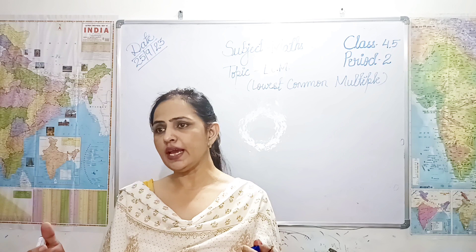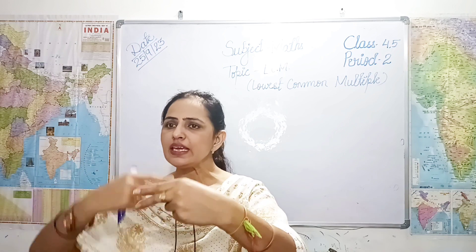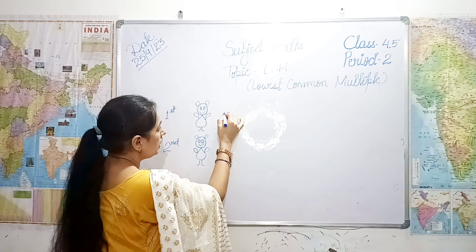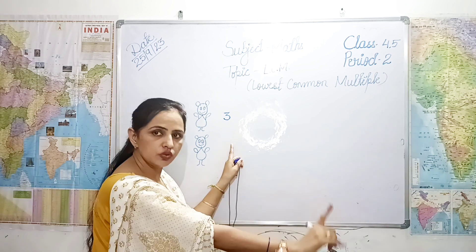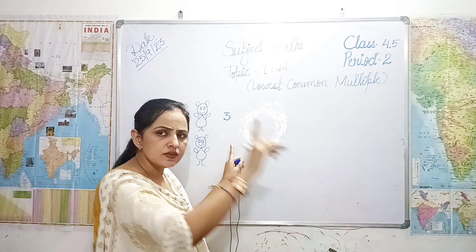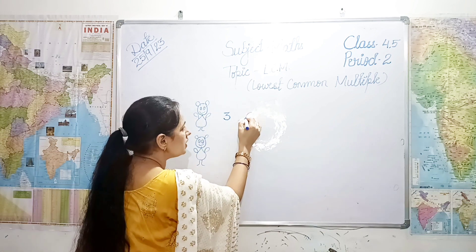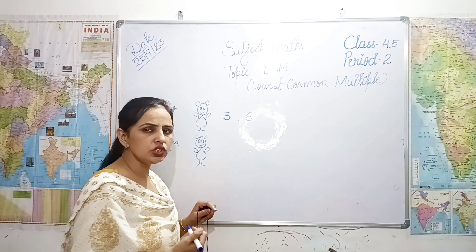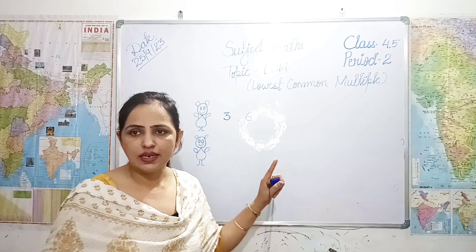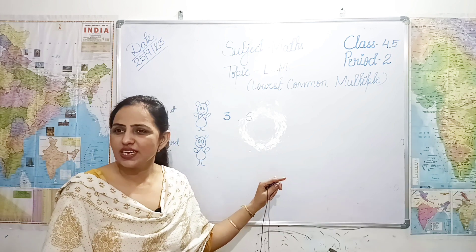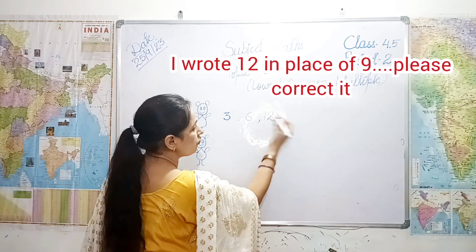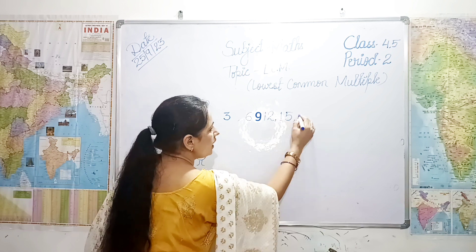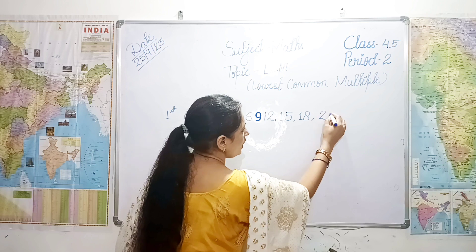One time may woh three jumps karta hai, so the first time he reaches three. Second time: three plus three, he reaches six. Third time: nine. Fourth time: twelve. Fifth time: fifteen. Then eighteen, twenty-one, twenty-four. Again three times: twenty-seven.